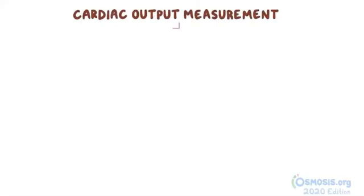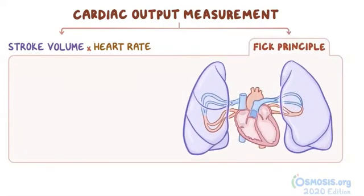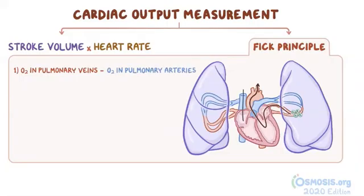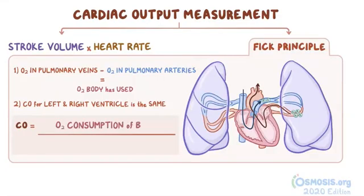As a quick recap, cardiac output can be measured either as stroke volume times heart rate, or with the Fick principle. The Fick principle assumes two things while in the steady state: first, that oxygen in the pulmonary veins going to the body minus the oxygen left in the pulmonary arteries coming back from the body must equal how much oxygen the body has used; and second, that the cardiac output for the right and left ventricles are the same. Using the Fick principle, cardiac output is calculated by dividing the oxygen consumption of the body by the difference in oxygen content of the pulmonary veins and pulmonary arteries.